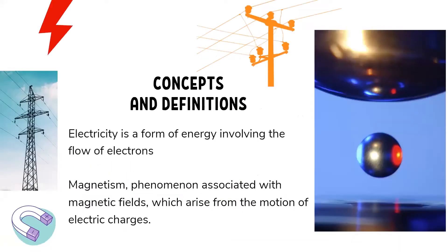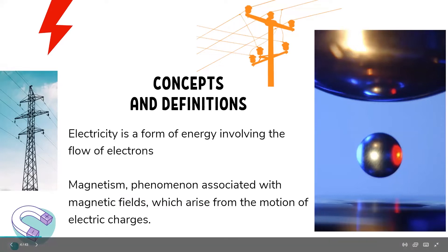Let's start with what is electricity and what is magnetism. Electricity is a form of energy and there is some flow of electrons in it. Magnetism is a phenomenon which is associated with magnetic fields. These magnetic fields are there due to some electric charges or due to the motion of electric charges. So now you know how electricity and magnetism are produced.